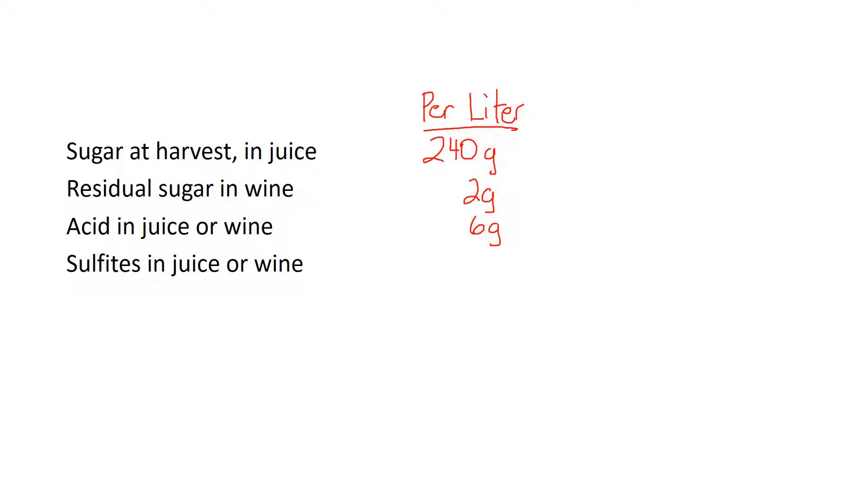What about sulfites? Sulfites are a lot lower. Sulfites, we talk in terms of parts per million, like 30 parts per million. So 30 parts per million is milligrams per liter. So if we're talking per liter, like we are here, we might be talking about sulfites around 30 milligrams.